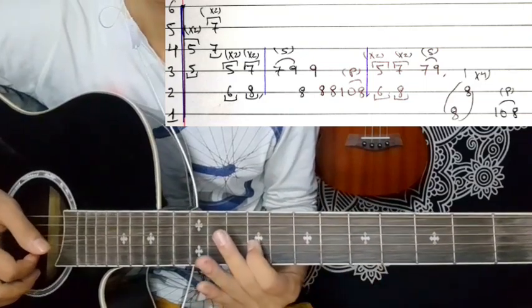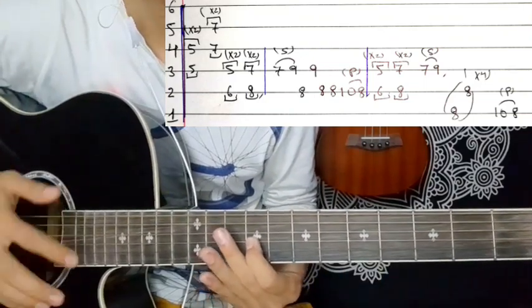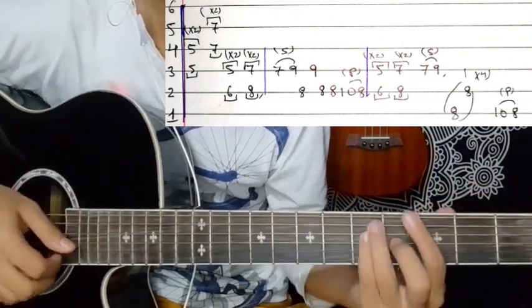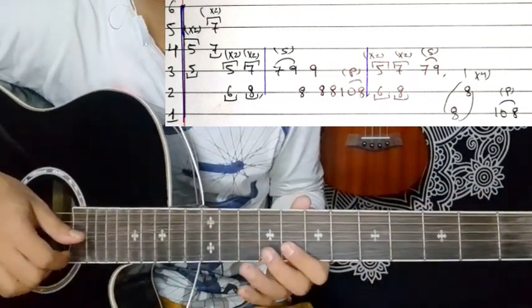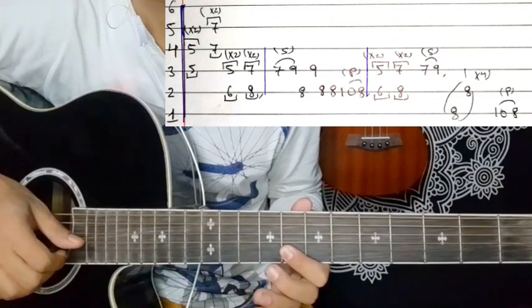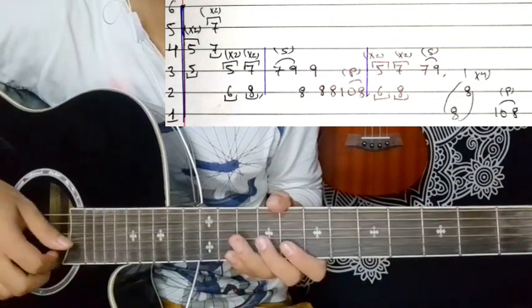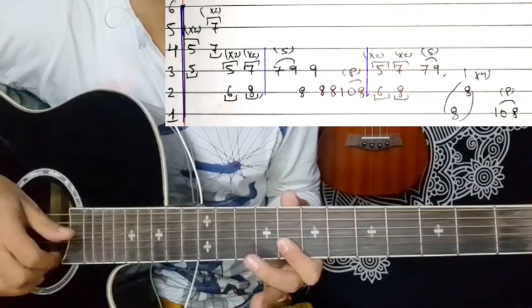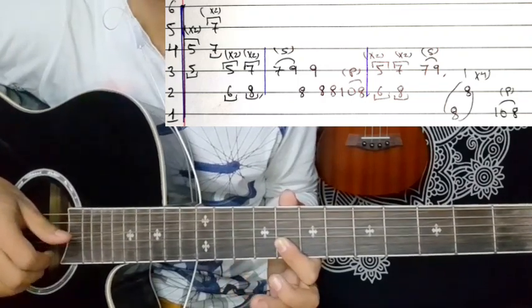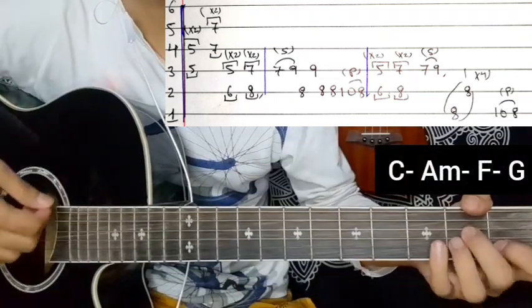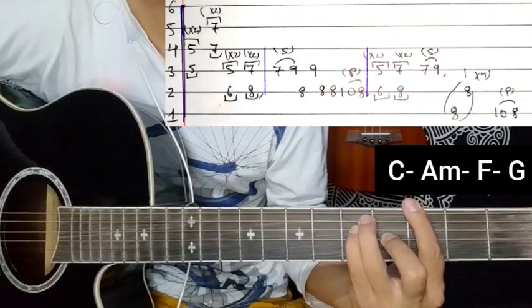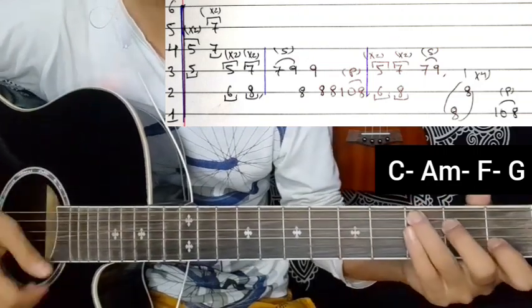For the chorus, use the same chords: C major, A minor, F major, G major. You play these same chords throughout the chorus section.